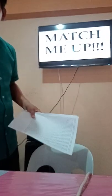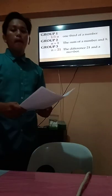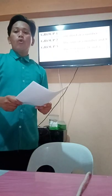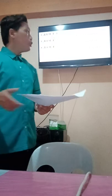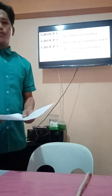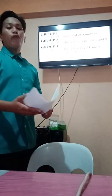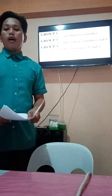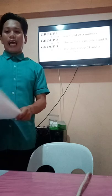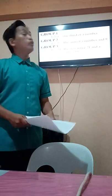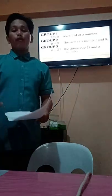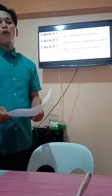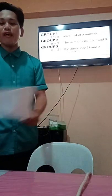Time is up. Let's check your work. Group 1, you have matched one-third and one-third of a number — very good, group 1. For group 2, you have matched the sum of a number and 9 — very good. For group 3, you have matched the difference of 21 and a number. Good job, everyone.